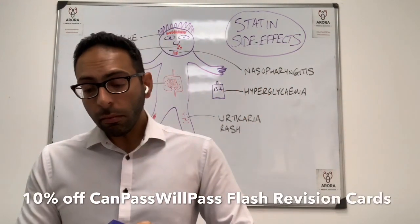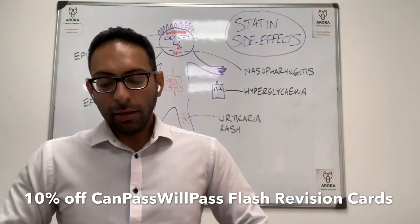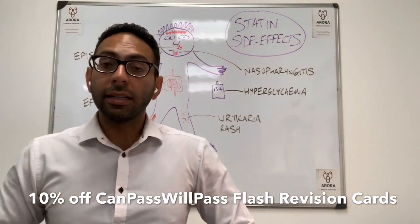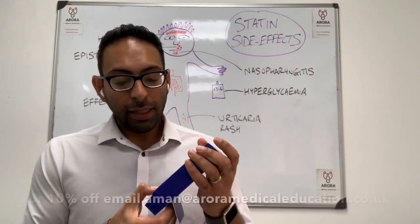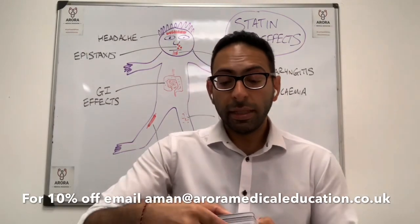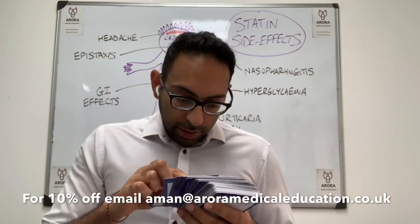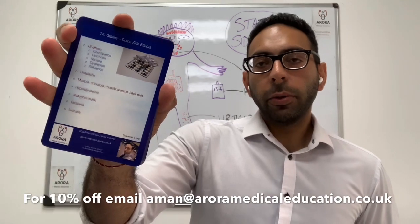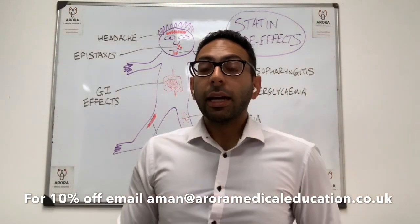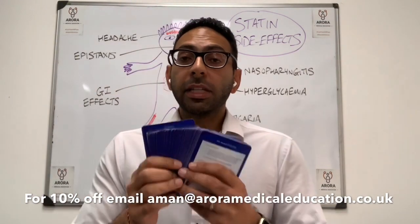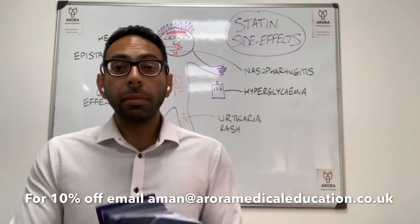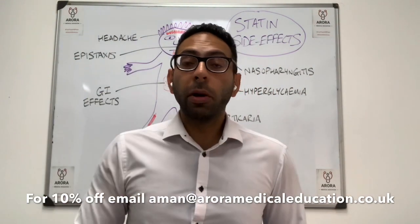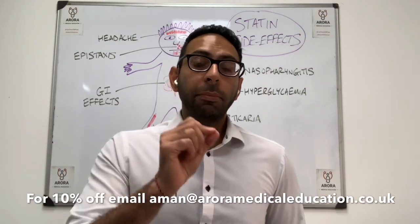Right, 10% off our medical flashcards. Actually, statin side effects should be in here — there are 150 cards here. People use these for all sorts of exams: PLAB 1, PLAB 2, medical school, MRCP, SCA, CSA, RCA, MSRA. Let's have a look at the statin one — side effects feature in this. There are 150 really common teaching cards. Statins are card number 24 — here you can see statin side effects, all there for you to quickly read whenever you like. Grab these, all the guidelines are in here, and they'll cover you for lots of exams. So for 10% off, send me an email at aman@auroramedicaleducation.co.uk. Say you watched the statin video and you want 10% off the flash revision cards. We post these globally, wherever you are in the world, and I will send you a discount code.